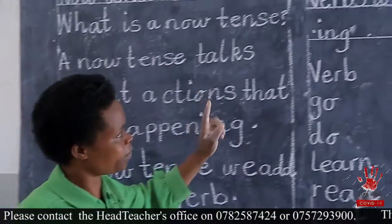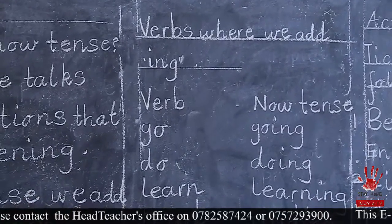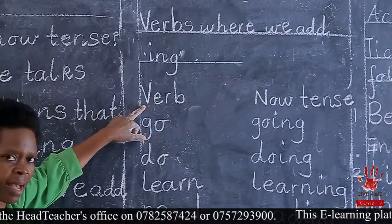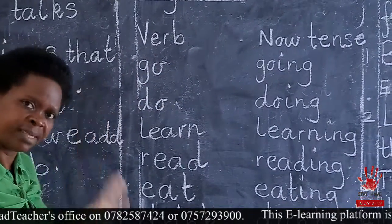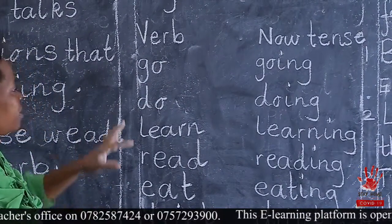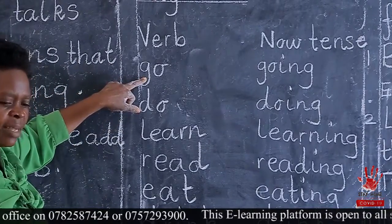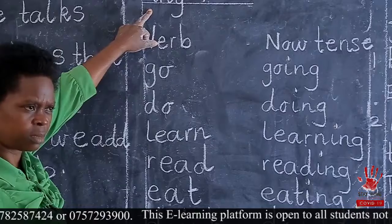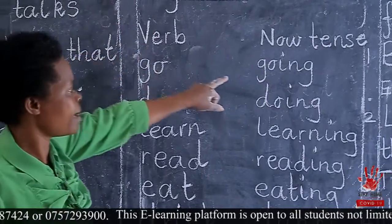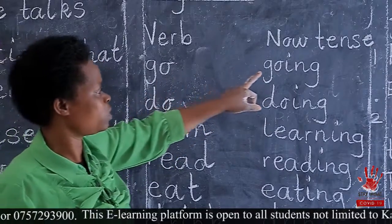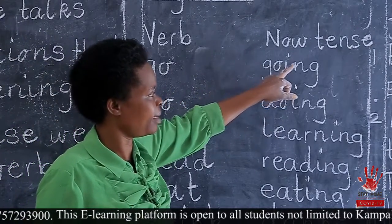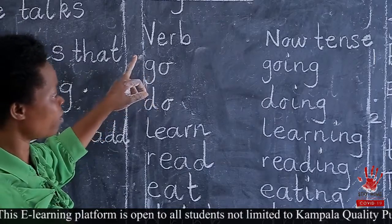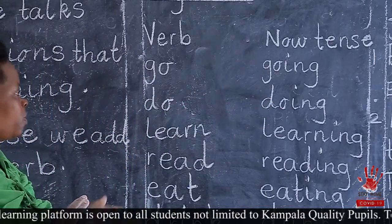Here, we have verbs where we add I-N-G. This side, I have a verb; here, we have now tense. So this verb is go. You can tell someone, go away. Go — you just put I-N-G in the now tense. Like, what are you doing? I am going. So go changes to going, whereby you put I-N-G. When you put I-N-G, you have changed the verb from the original one to a now tense. So it is going.